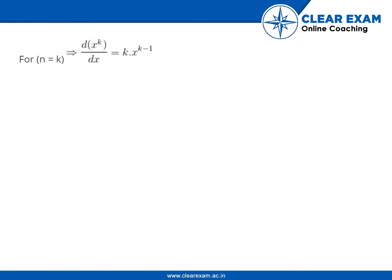For n is equal to k, this gives d of x to the power k upon dx is equal to k into x to the power k minus 1. Hence true for n is equal to k.